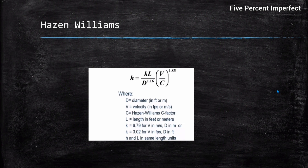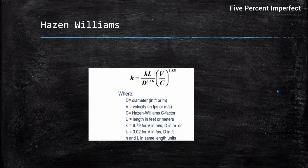The Hazen-Williams equation states: h = k × L / (D^1.16) × (V/C)^1.85, where D is diameter in feet or meters, V is velocity, C is the Hazen-Williams C factor depending on material type, L is length, and k equals 6.79 for velocity in meters per second or 3.02 for velocity in feet per second. A change in the unit of length causes a corresponding change in the unit of head.